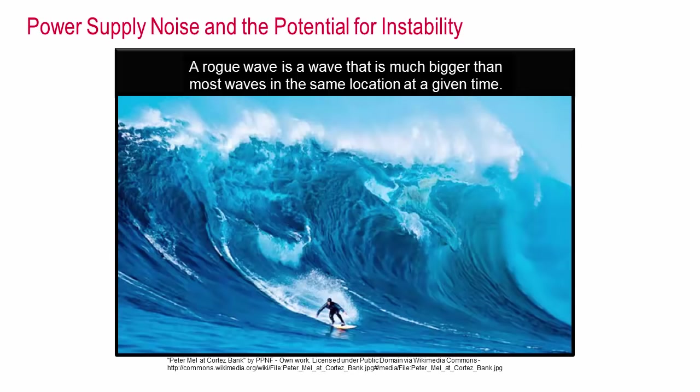Rogue waves are abnormally large in relation to other typical waves in the area and have been documented in oceans for more than a century. More recently, we've discovered that similarly derived waves occur in power systems. As with their ocean counterparts, these rogue waves result in much larger voltage transients than expected.